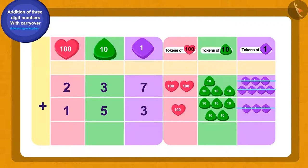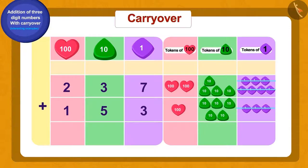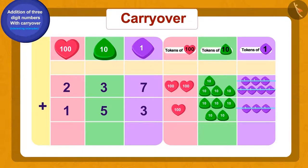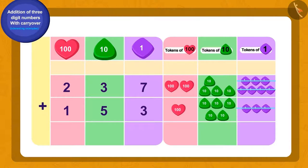Add 10 ones tokens to make one token of tens. We will write this 10 token along with the rest of the tens tokens. Using the carryover process, we will show it by writing a one in the tens digit place. Now we do not have any ones token left, so we will write a zero for this.